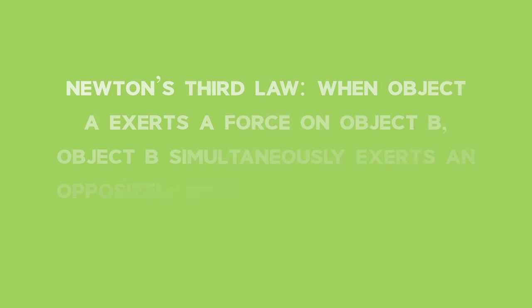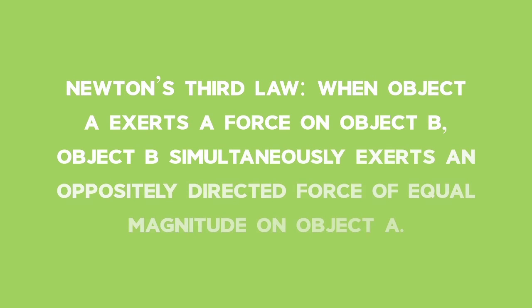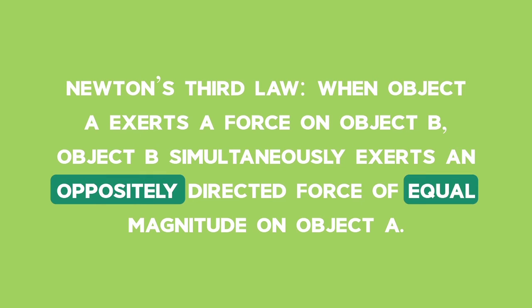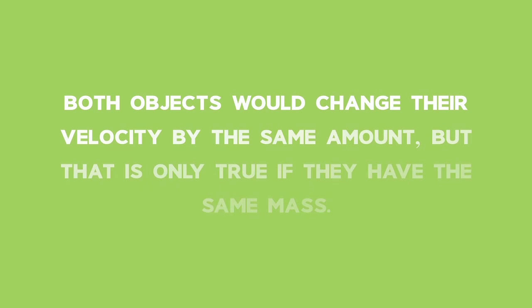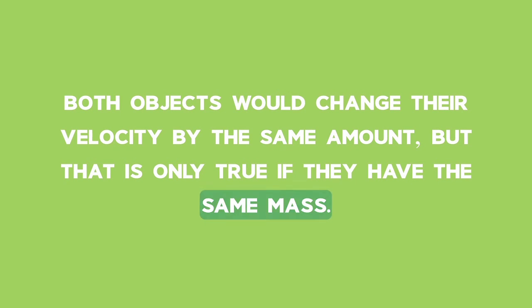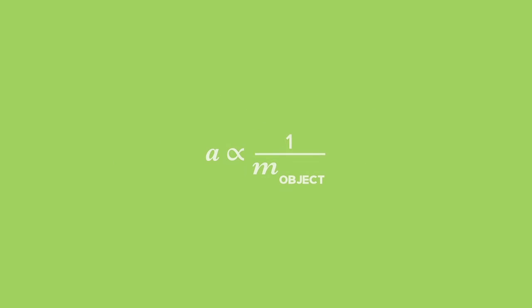This brings us to Newton's third law, which states that when object A exerts a force on object B, object B simultaneously exerts an oppositely directed force of equal magnitude on object A. You might think this means both objects would change their velocity by the same amount, but that is only true if they have the same mass. Remember that Newton's second law also says that acceleration is inversely proportional to the mass of the objects.